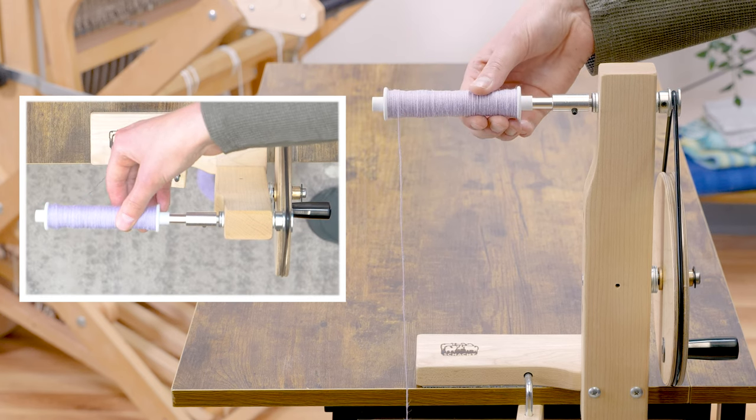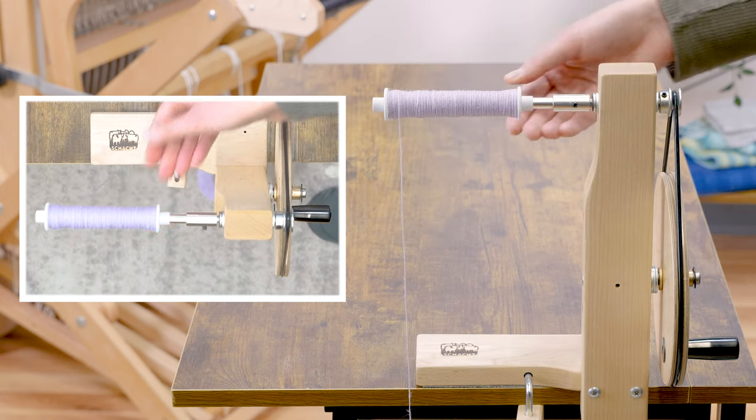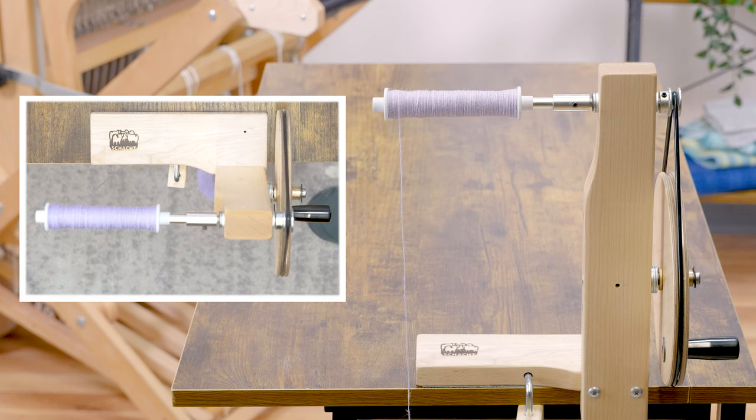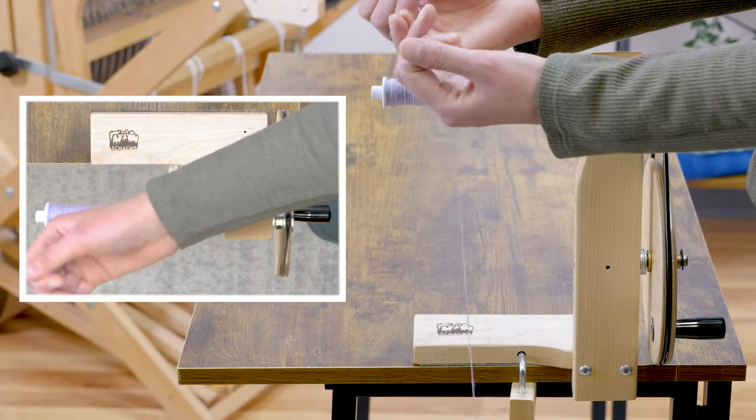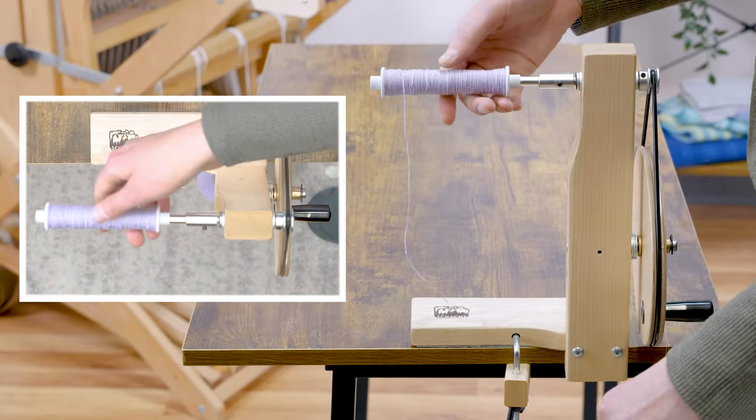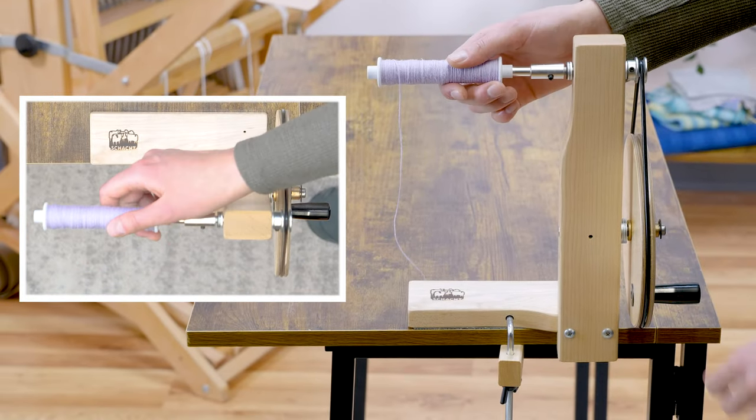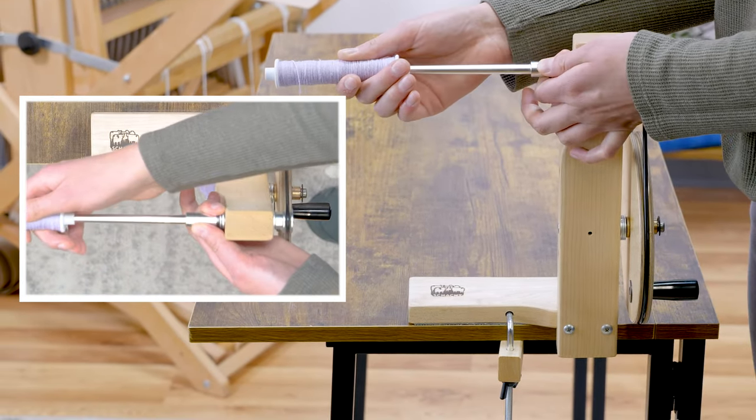This process takes some practice so don't worry about it if your first few bobbins aren't perfect. With some time you'll be making beautiful bobbins. That looks pretty good to me so you can cut or break off the excess yarn. And then take it off the rod and it's ready to put in your boat shuttle.